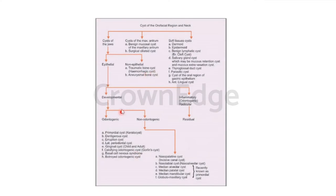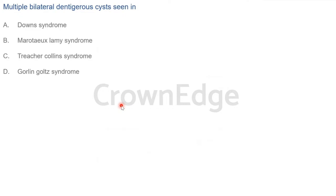Once cyst classification is clear, the examiner can twist questions based on it. Most students would have read this but keep practicing it. Next question: Multiple bilateral dentigerous cysts are seen in — there are two important syndromes associated with jaw cysts. What are they?